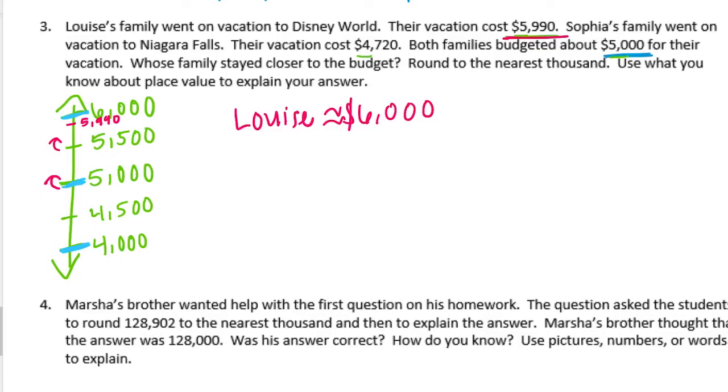Now, Sophia's family went on vacation and they actually spent less. They spent $4,720. So $4,720 is greater than $4,000 and greater than $4,500, but it's less than $5,000. So it's about right in the middle there. If we round that to the nearest thousand, that would be closer to $5,000 than $4,000. So they spent about $5,000 on their vacation. Whose family stayed closer to the budget? Well, that would be Sophia's family stayed closer to the budget.